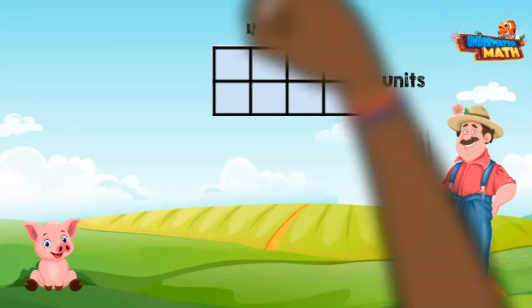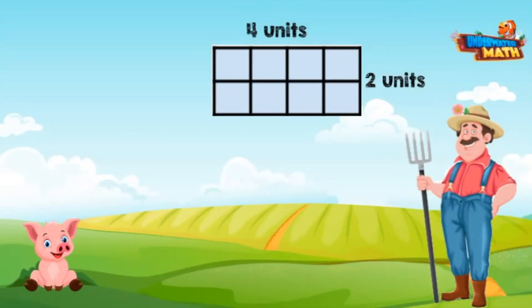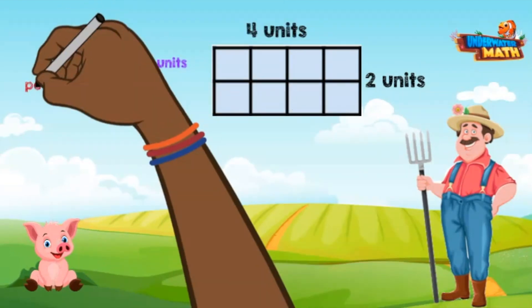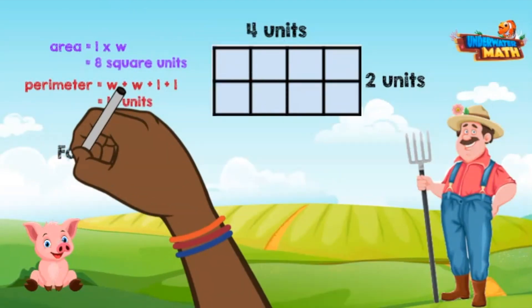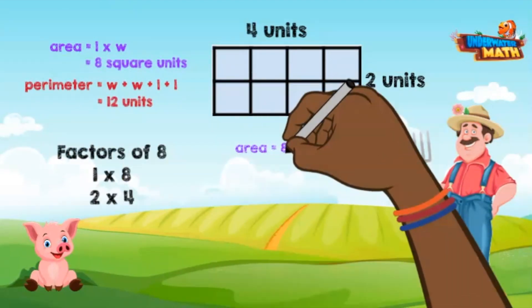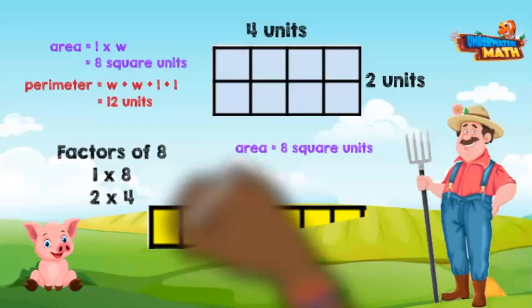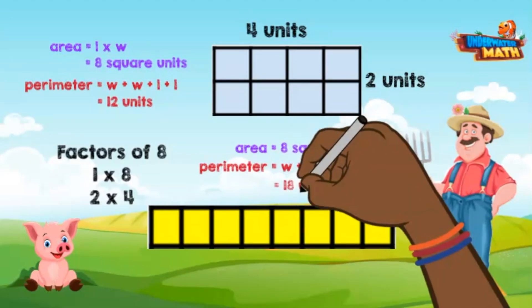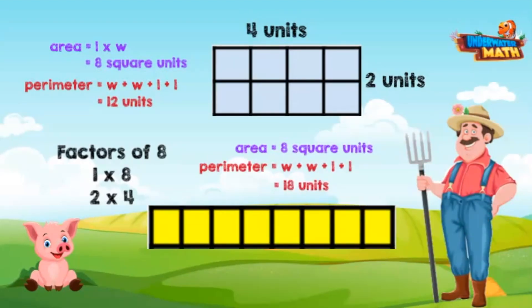This time we want to find a rectangle with the same area but with a different perimeter as the model shown. The width is 2 units and the length is 4 units, so the area is 8 square units. What are the other factors of 8? 1 times 8. Would a 1 by 8 rectangle have the same area as the model but a different perimeter? Let's find the perimeter to make sure. Yup, this rectangle would have an area of 8 square units but a perimeter of 18 units.